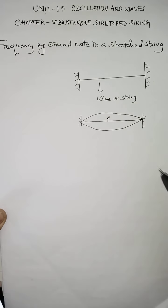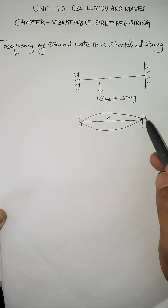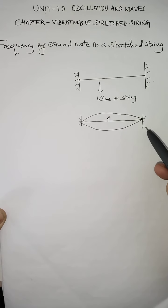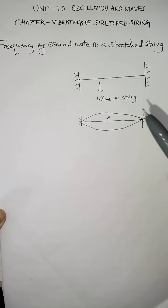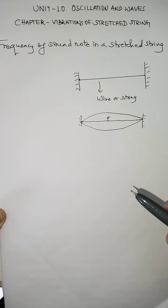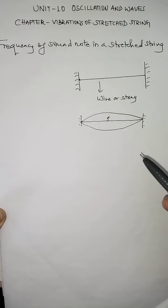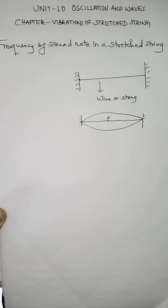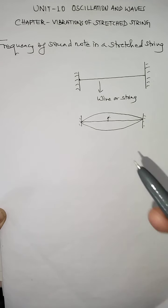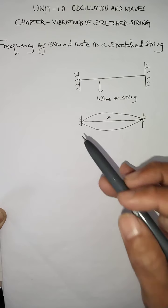These transverse progressive waves can be observed in the form of standing waves, because one of the waves is the incident wave travelling in one direction and it gets reflected from the rigid support, travelling back as a reflected wave. The reflected wave and incident wave are always in opposite directions and they superimpose to form what is called a transverse stationary wave. So the vibration of the string is due to the transverse stationary wave in the string.